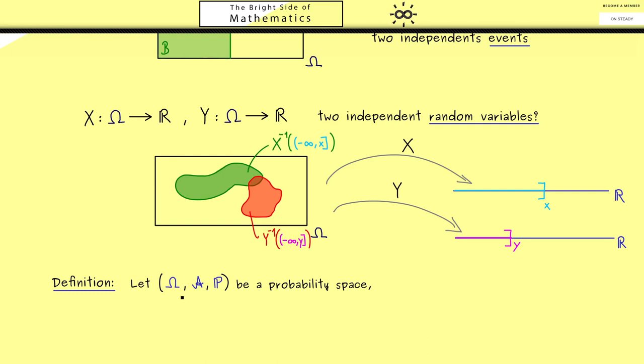As often, we take a whole probability space, which means we have a sample space omega, a sigma algebra A, and a probability measure P. And as you have seen above, what we also need are two random variables X and Y. Please note both are real-valued and defined on omega.